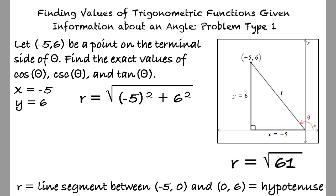Now that we've established the values for each side of the triangle, we can use trigonometric identities to find the cosine, cosecant, and tangent of θ, right?